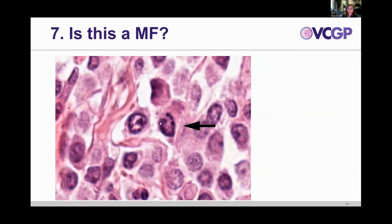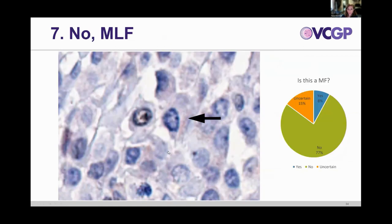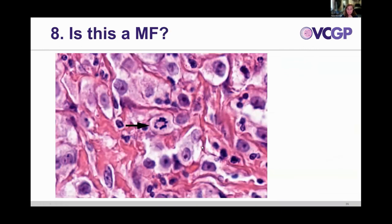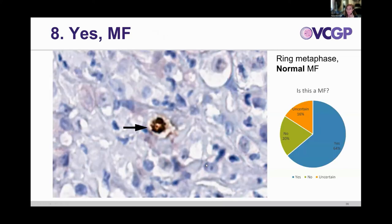The next one, also a little blurry, is ring-shaped and smooth with no spikes — it kind of just looks like a nucleus with a nuclear membrane, similar to the cell right next to it. This is negative on PHH3 — most of the crowd picked that this was a mitotic-like figure. The next structure had a little less consensus: it is another ring shape, but it's spiky — we have a ring shape, rods and spikes, and a pale cytoplasm. So this is consistent with a ring metaphase.